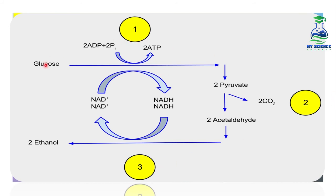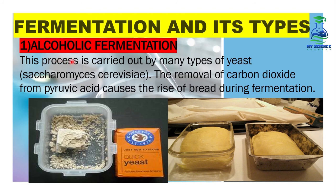In the first step, the glucose molecule breaks down into 2 pyruvates. Then, from the 2 pyruvates, 2 carbon dioxide molecules are released. As a result, 2 acetaldehyde molecules form, and these 2 acetaldehyde molecules are further converted into 2 ethanols — that is step 3. Alcoholic fermentation is carried out by many types of yeast, like Saccharomyces cerevisiae.